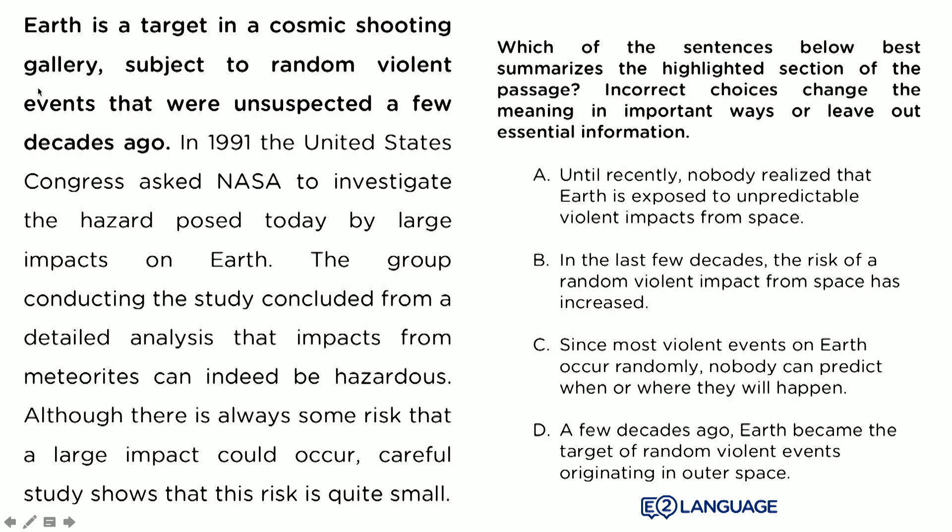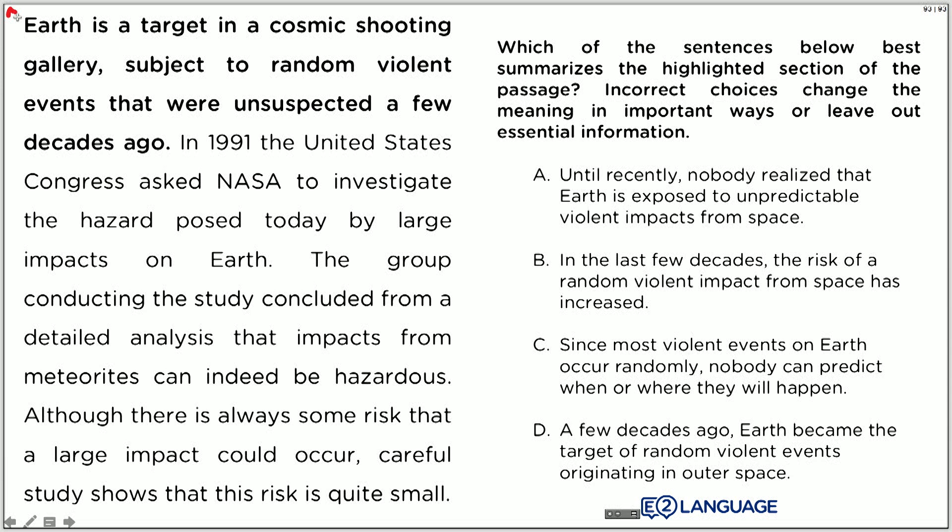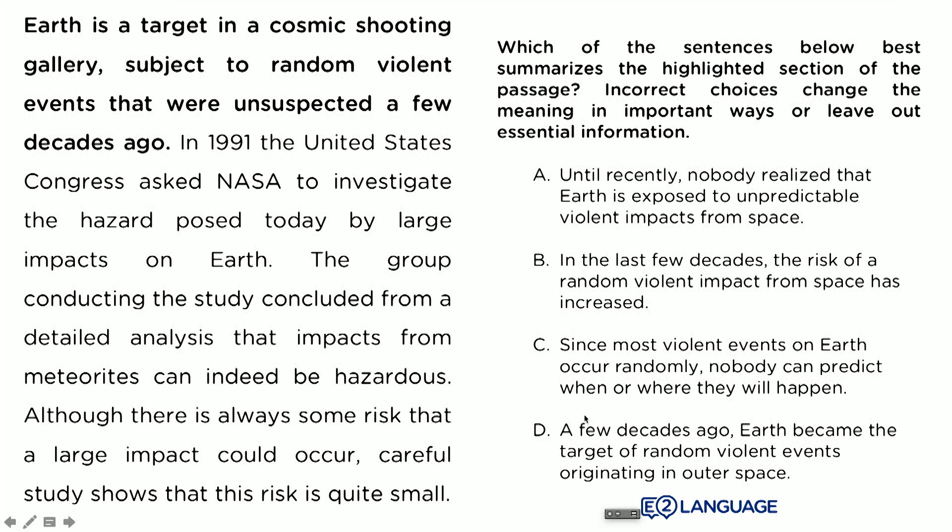Let's read it. It says: 'Earth is a target in a cosmic shooting gallery, subject to random violent events that were unsuspected a few decades ago.' What does that mean, and how would you rewrite this? I would say something like: Earth is bombarded by lots of meteors and people didn't realize this until like 10, 20 years ago. That's my summary of it.